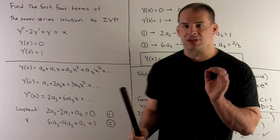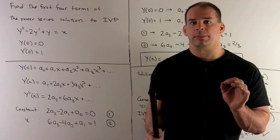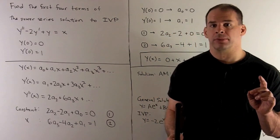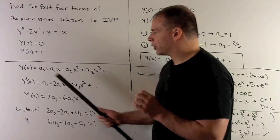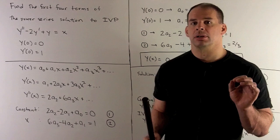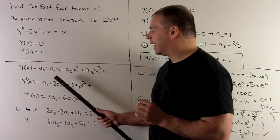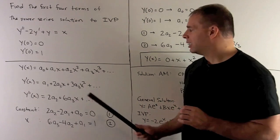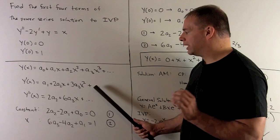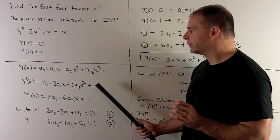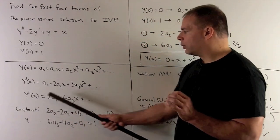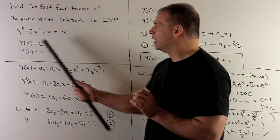We take that solution and push it through our initial value problem — doing so will let us find as many a's as we need. Taking the derivative term by term, y prime equals a one plus two a two x plus three a three x squared. We stop there since we don't need beyond a three. Then we take another derivative to get y double prime, and push everything through the ODE.